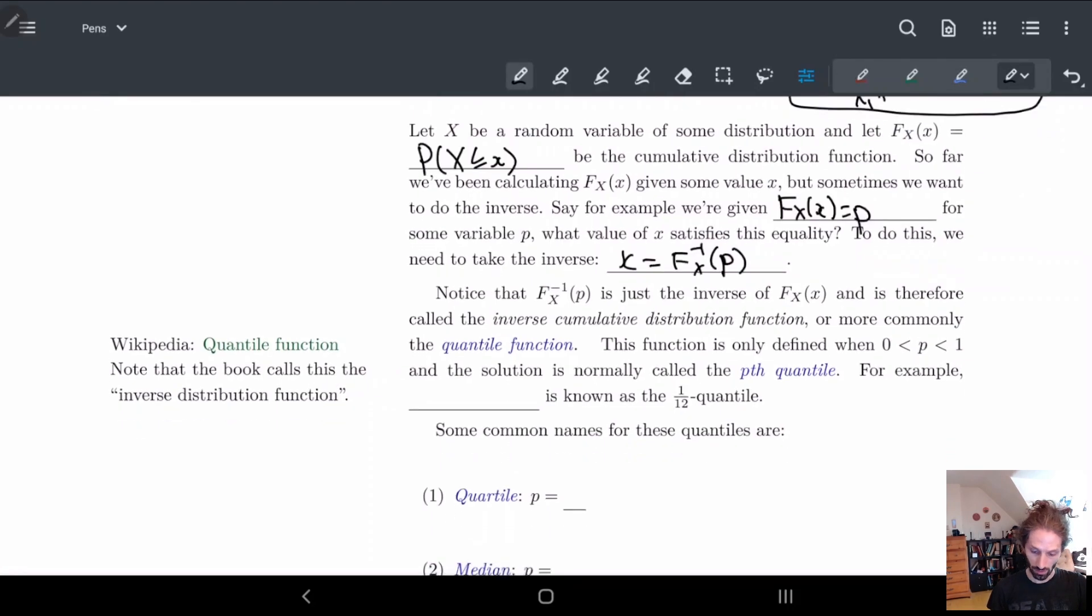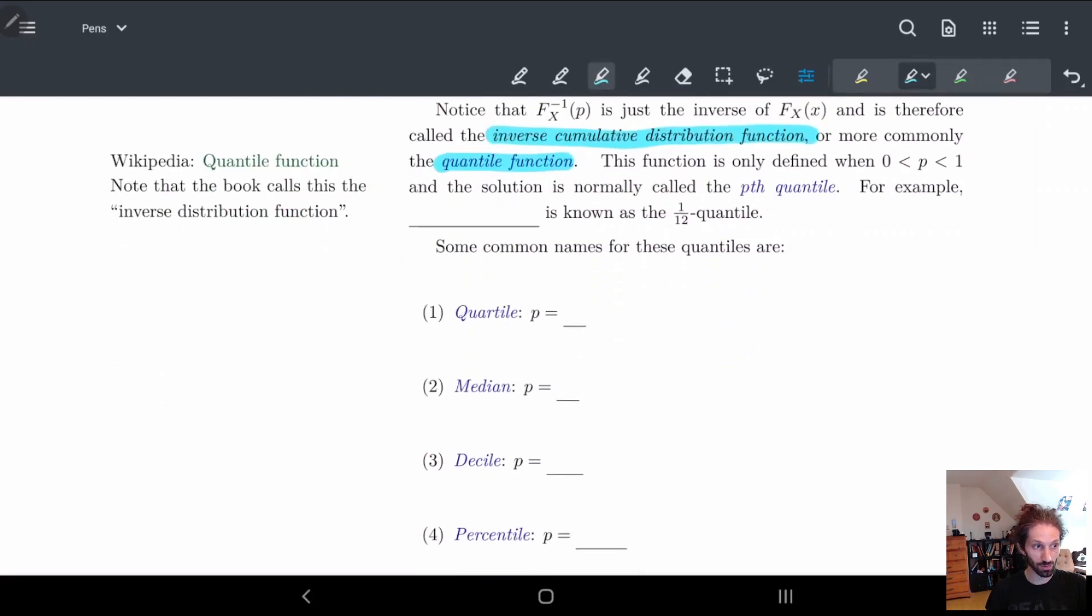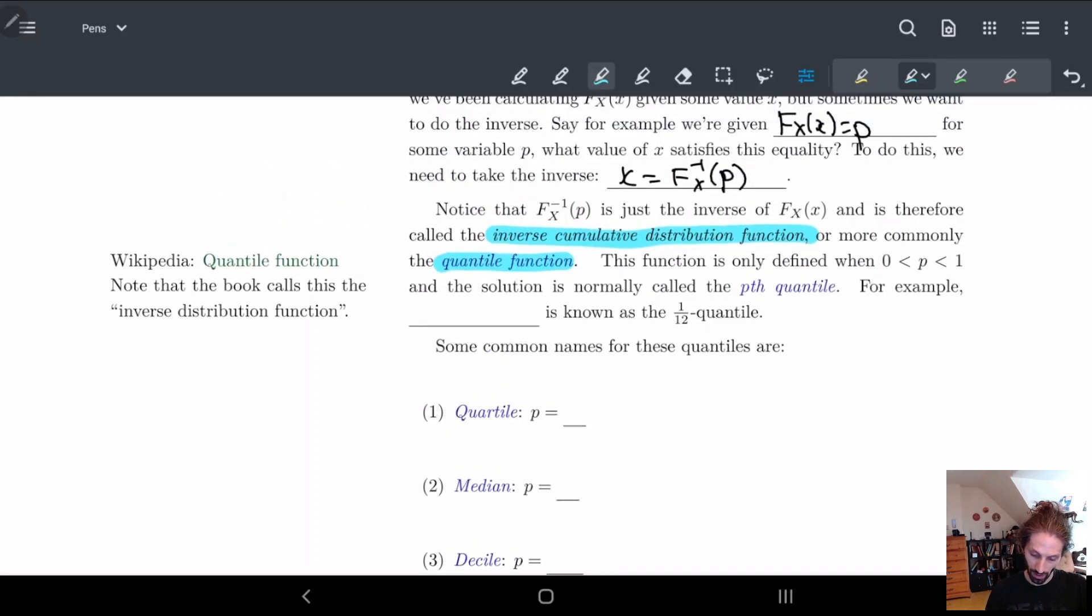These are called quantiles. So the book calls these inverse distribution functions, but in reality they're the inverse cumulative distribution functions, or as we call them, quantile functions. This you've definitely seen because this is when, like, you're doing standardized tests and they say you're in the tenth percentile or something. Basically, the function is only going to be defined from zero to one, because your values only ever start off at zero and end up at one.